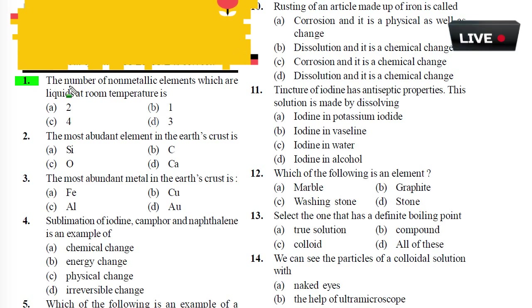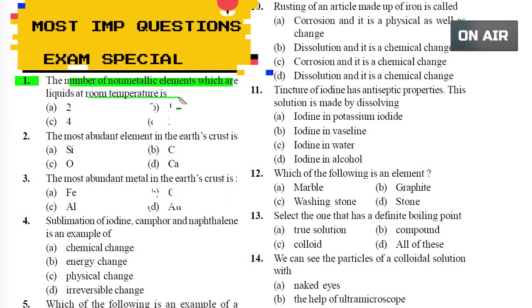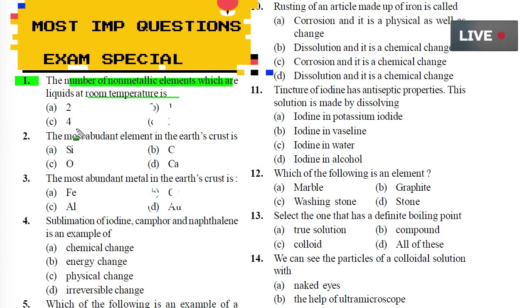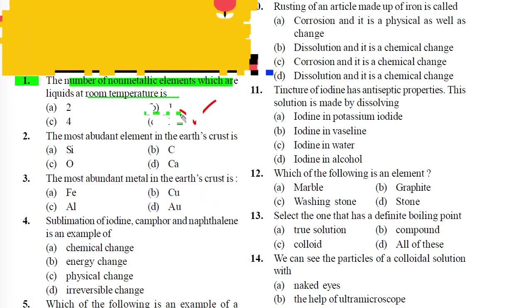Question 1: The number of non-metallic elements which are liquids at room temperature is: A) 2, B) 1, C) 4, D) 3. Answer is B) 1. Bromine is the only non-metal which is liquid at room temperature.